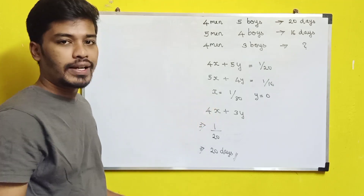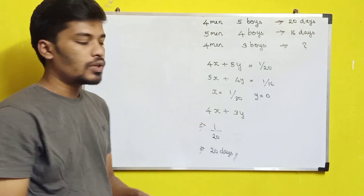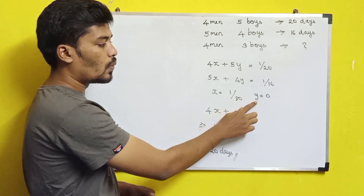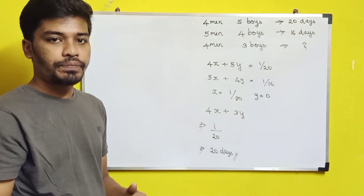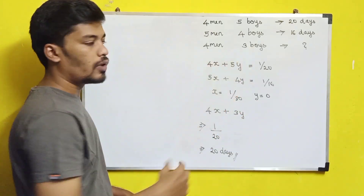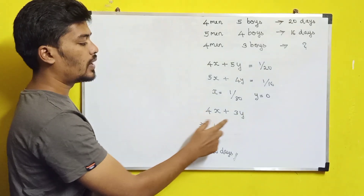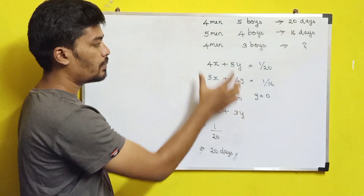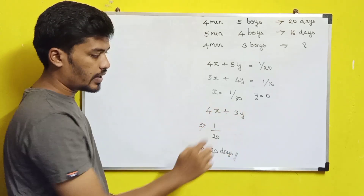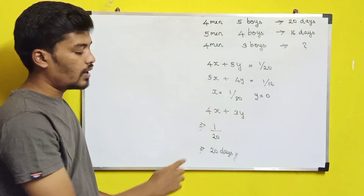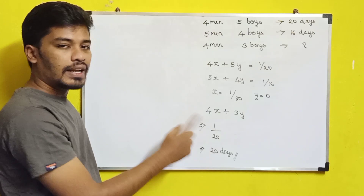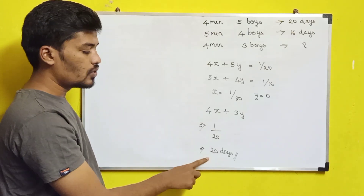If you solve these two equations, x and y will have values. If x is equal to 1 by 80 and y is equal to 0, then we can solve the required equation. So 4x plus 3y — substituting the values gives us the answer of 1 by 20.